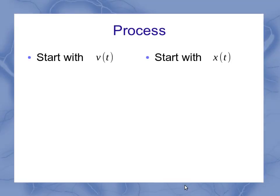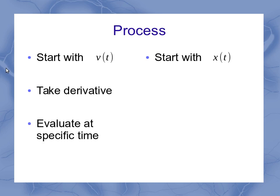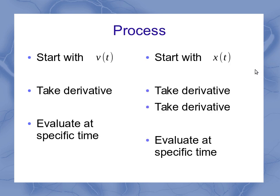Now the process. It's the same sort of process we used in velocity, but now we've got two different paths we can go. If you're starting with a velocity function, then you can take the derivative of that velocity function, and then evaluate that derivative at a specific time to find your acceleration at a particular time. If you start with the position function, you have to take the derivative twice, and then evaluate it at a specific time.